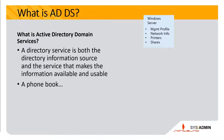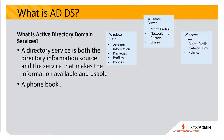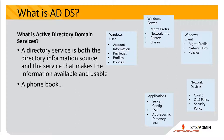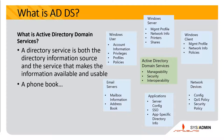This includes Windows Server management profile, network information, printers, and shares. You also have Windows users — account information, privileges, profiles, and policies. For Windows clients: management profile and network information. For network devices: configurations, quality of service policy, and security policy. For applications: server configurations, single sign-on or SSO, and app-specific directory information. Email servers are also included, dealing with mailbox information and address book. These are the Active Directory Domain Services, providing manageability, security, and interoperability.